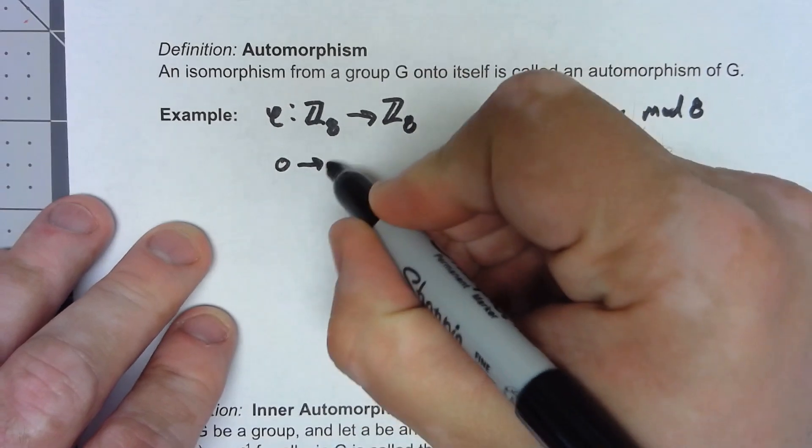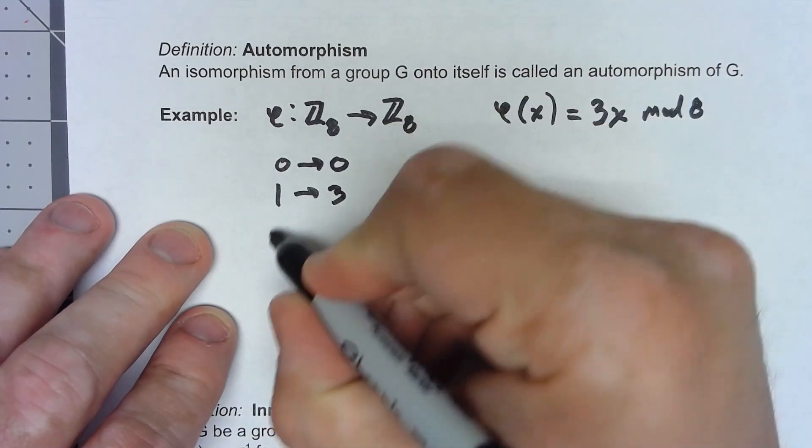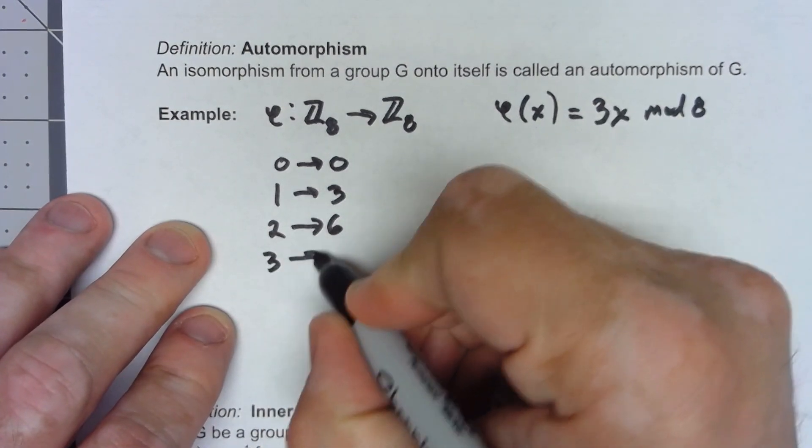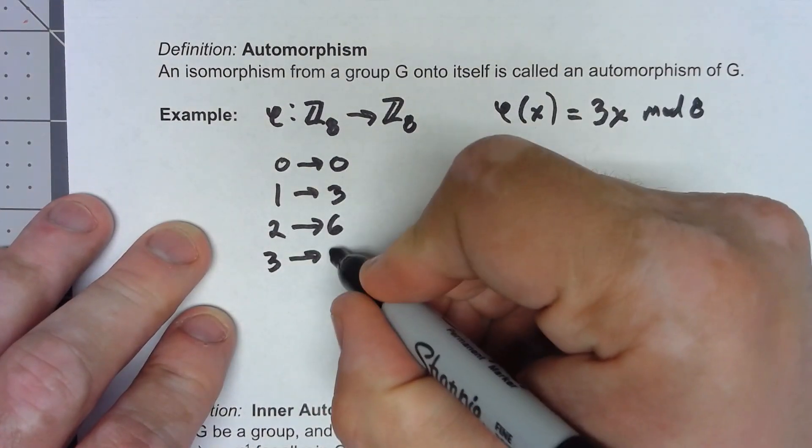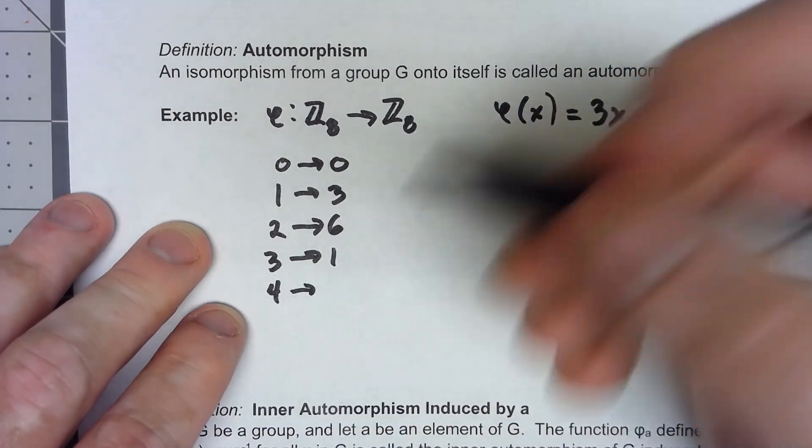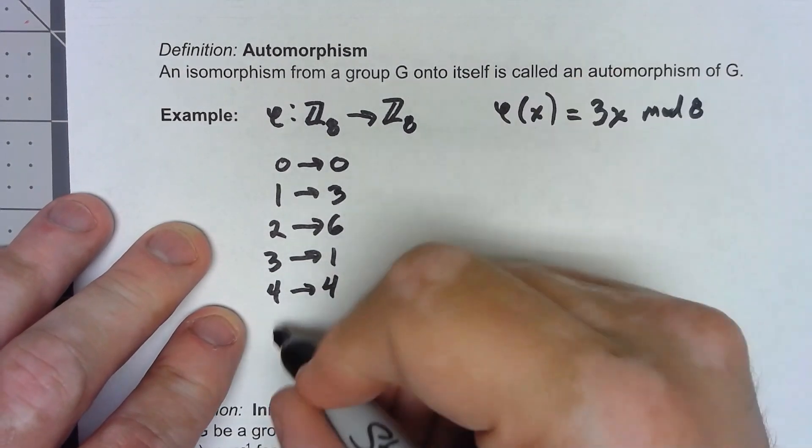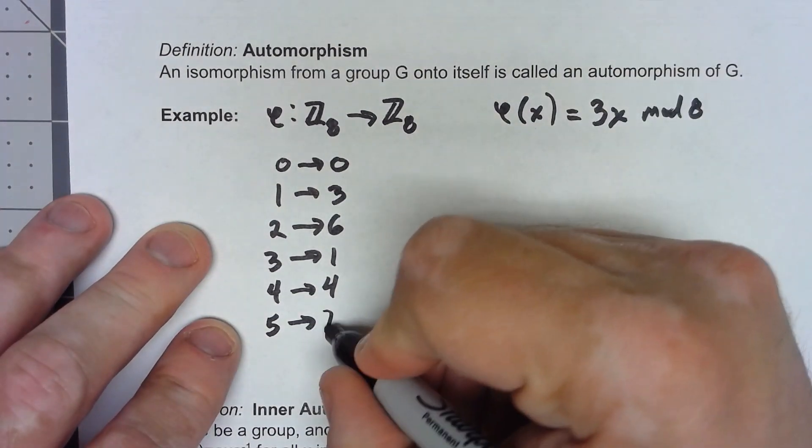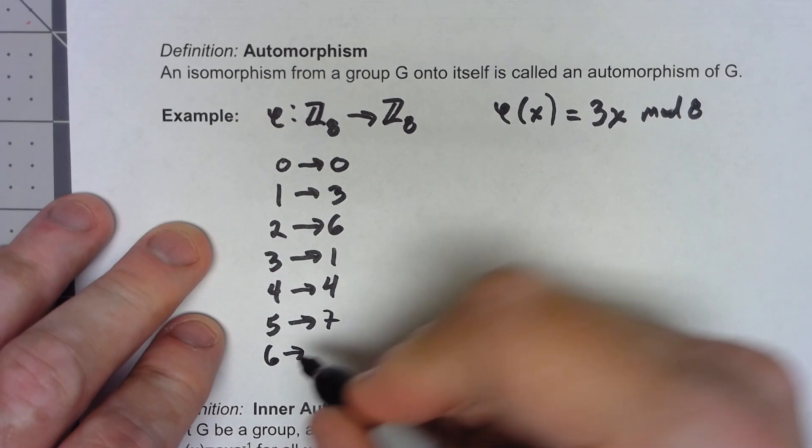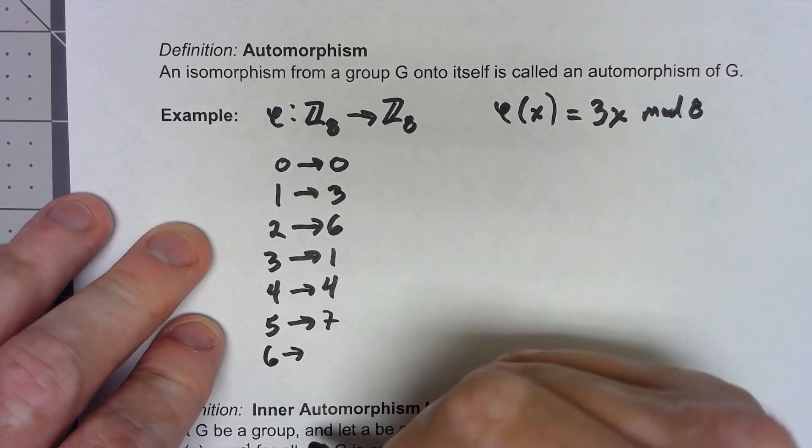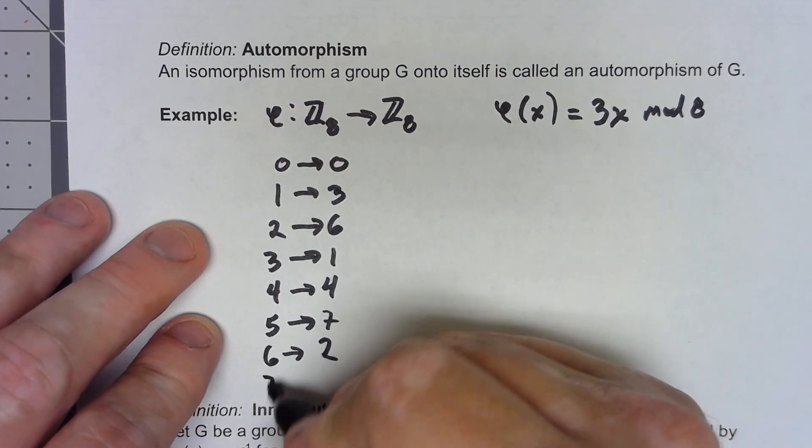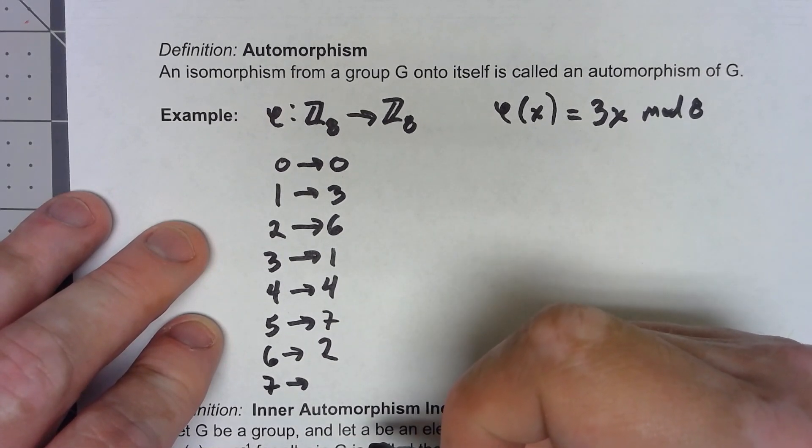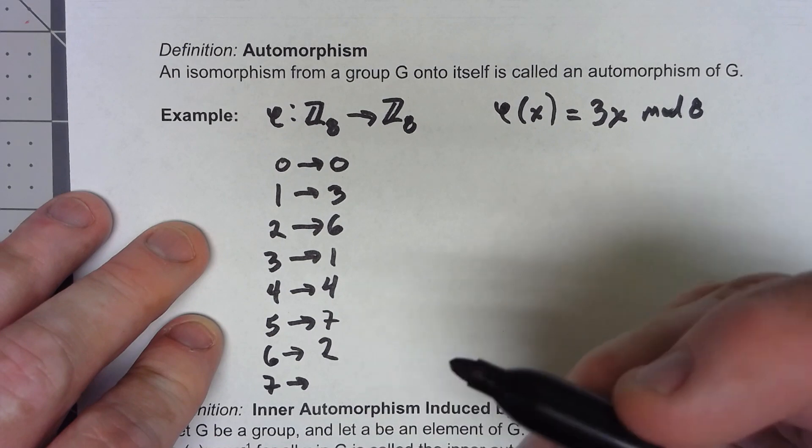So 0 obviously maps to 0, 1 maps to 3, 2 maps to 6, 3 maps to 9 which mod 8 would be 1, 4 maps to 12 mod 8 is 4, 5 maps to 15 which would be 7, 6 maps to 18 mod 8 is 2, 7 maps to 21 mod 8 is 5.